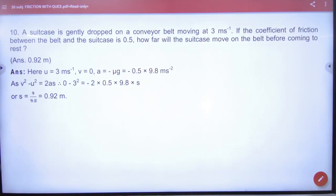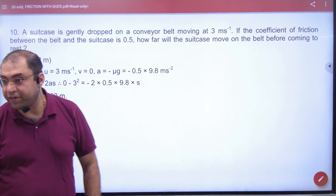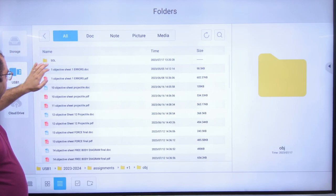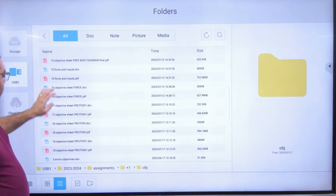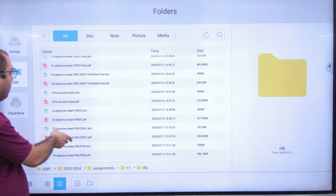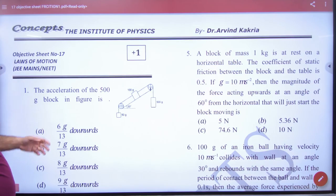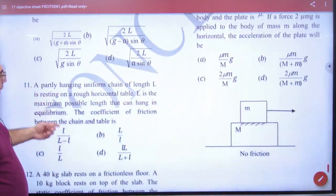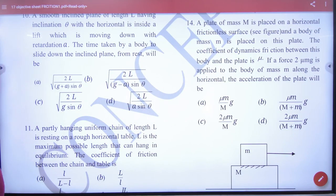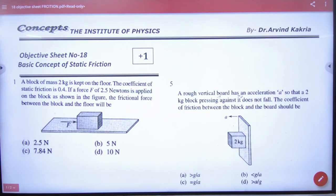Your next homework is objective sheets on friction. Objective sheet number 17 - do all the numericals except 12 and 14. Those will not be included. Then you have sheet 18. You have to try both sheets, sheets 17 and 18.